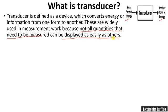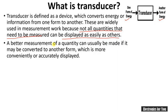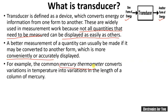Most quantities cannot be measured directly, and therefore we need a device which will convert that quantity into a quantity which can be measured by some suitable scale. That's why a transducer is needed in an instrumentation system. A better measurement can usually be made if the quantity is converted to another form which is more convenient and accurately displayed.